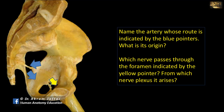Which nerve passes through the foramen indicated by the yellow pointer? The nerve passes through the obturator foramen. The obturator foramen is closed by the obturator membrane, by the obturator internus from inside, and the obturator externus muscle from outside. However, there is a small canal called the obturator canal that is still open and allows the passage of a neurovascular bundle — the obturator nerve and vessels. The nerve is a branch of the lumbar plexus and the vessel is a branch of the internal iliac artery.